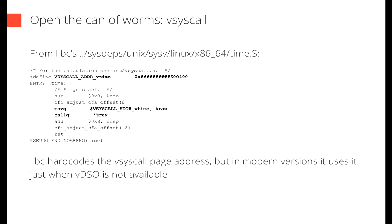Researching the vsyscall: it turns out to be an optimization relic from the past. Normally, invoking a system call requires writing arguments to CPU registers and sending a special instruction to switch to kernel mode — much slower than a native function invocation. So kernel developers said: there are a few very simple system calls like time, gettimeofday, and getcpu, and it's wasteful to switch to kernel mode just for them. They implemented the vsyscall mechanism: mapping native code for a few system call invocations into every process's address space, so user space can execute them natively without switching to the kernel. The time system call was hard-coded at this address.